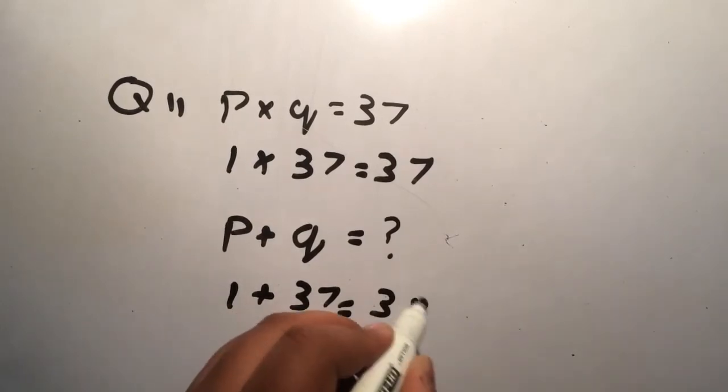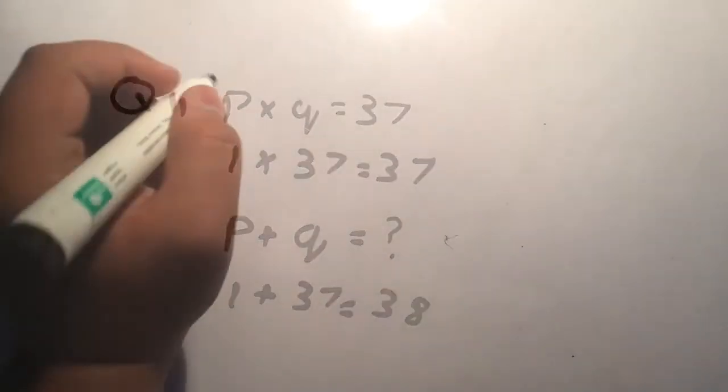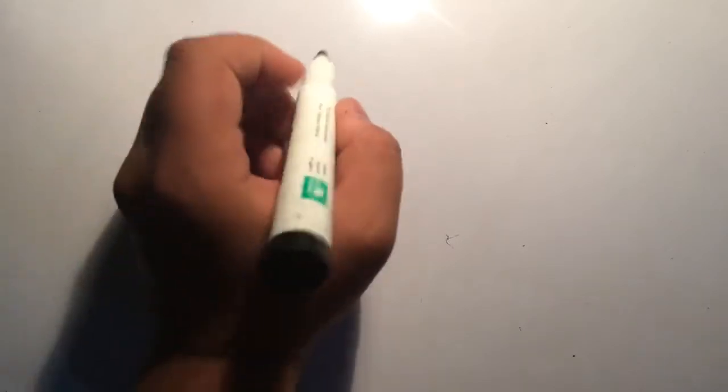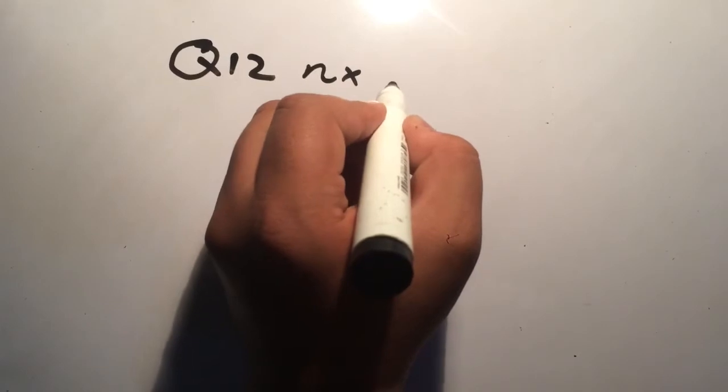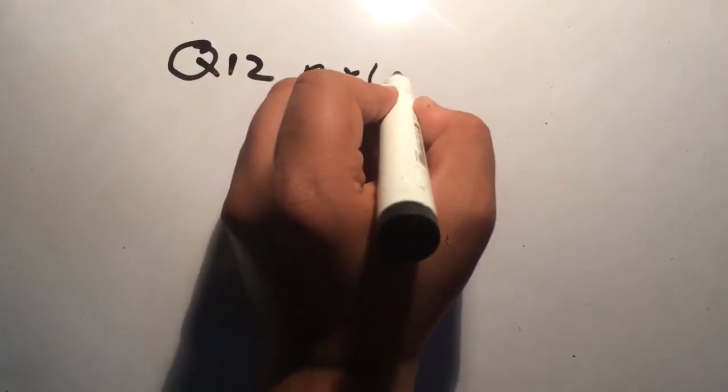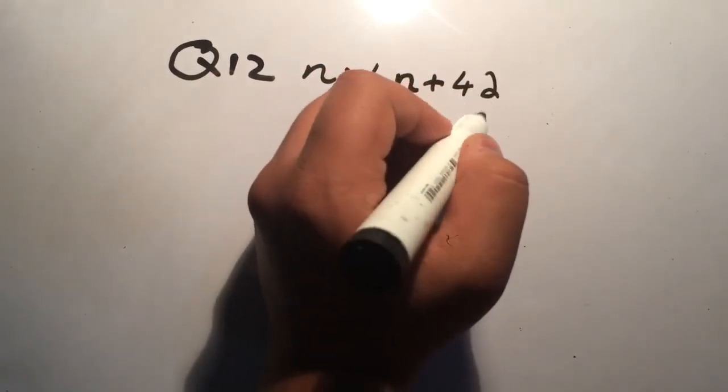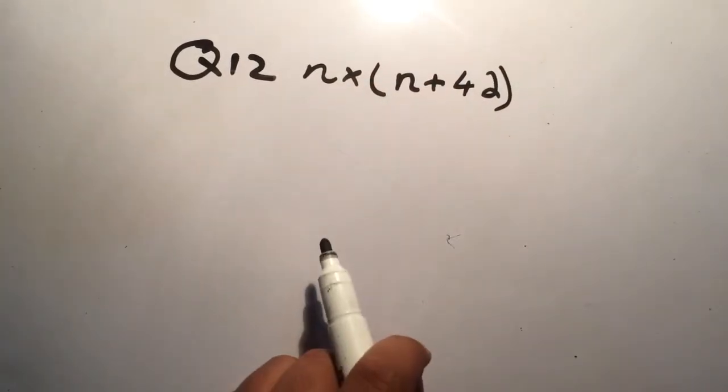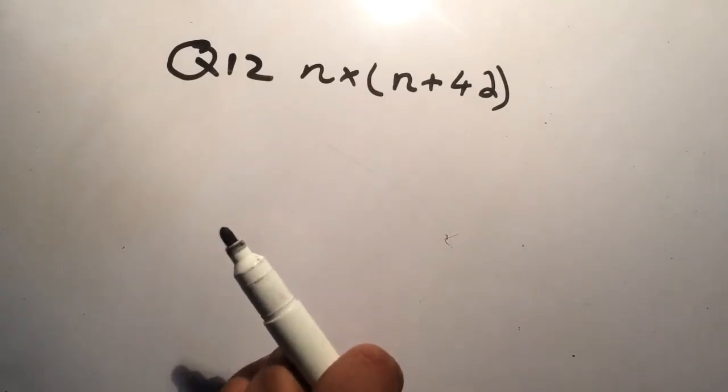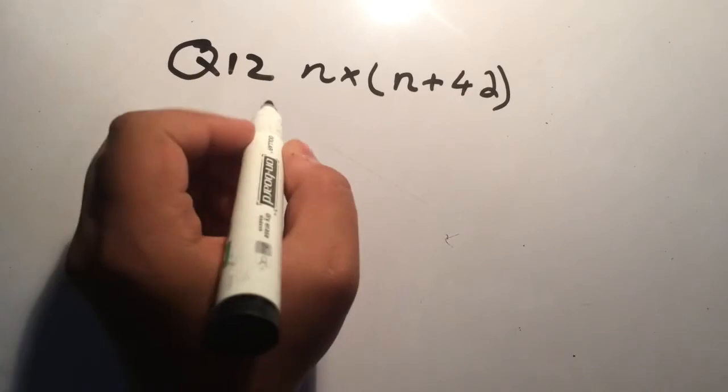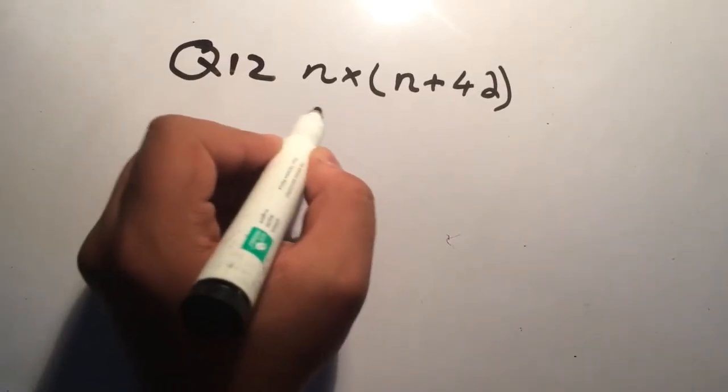Now come into the last question of exercise 1a, question 12. It is n into (n+4). It said that if n is a whole number such that n into (n+4) is a prime number, find the prime number and explain your answer.